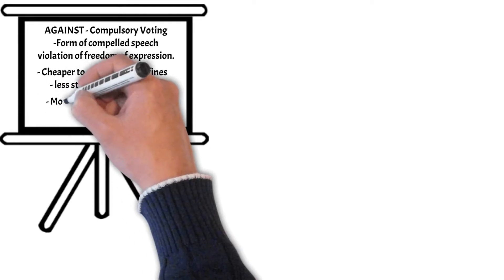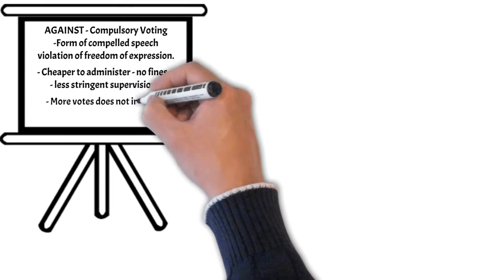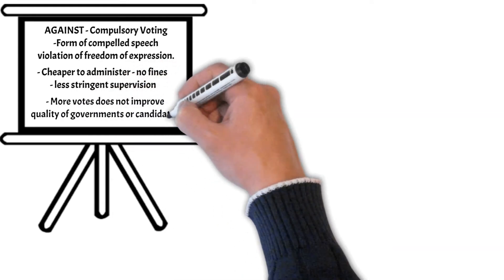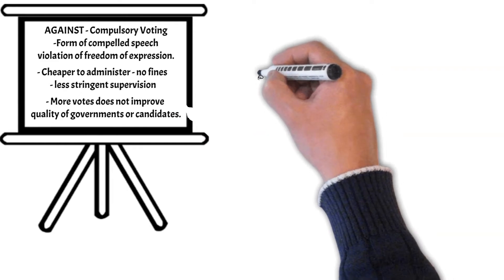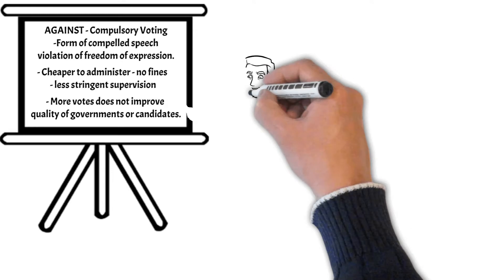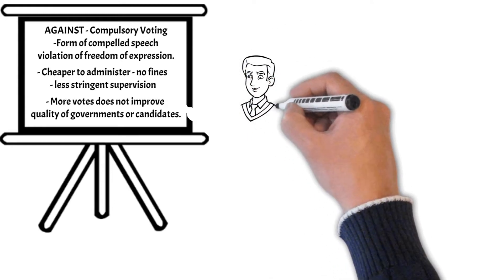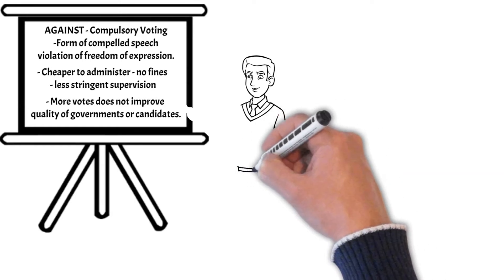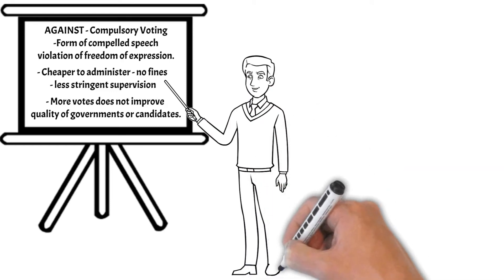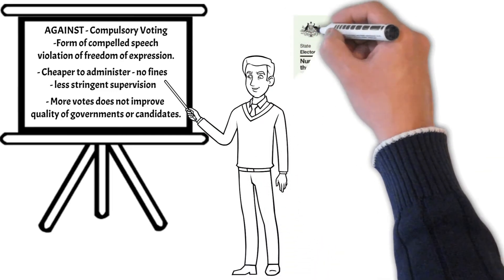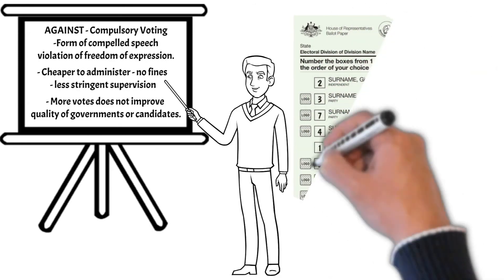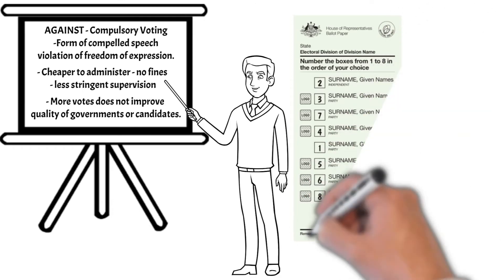Another compelling argument against compulsory voting is that an increased number of votes within the same jurisdiction does not necessarily lead to an improved quality of government or candidates. In Australia, we have a two-party preferred system where this argument could be made — is a better outcome achieved by 20 million votes for two parties more so than 12 million votes for those same two parties? Perhaps not. This argument does not hold in countries like the UK, which has several smaller but still major parties, where more votes could indeed lead to a better outcome.